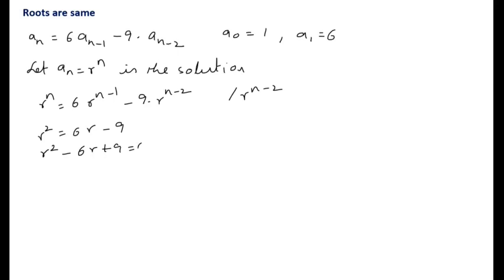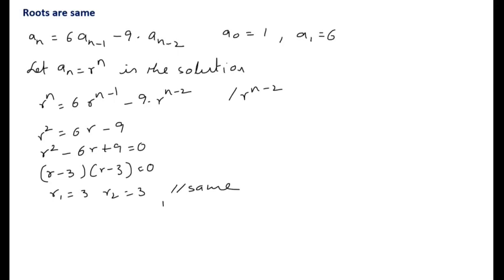The characteristic equation becomes r² - 6r + 9 = 0, which factors as (r - 3)(r - 3) = 0. The roots are r₁ = 3 and r₂ = 3 — the same root 3 is repeated twice, so the multiplicity is 2.